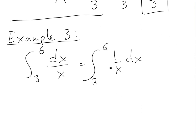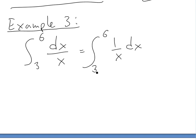If we look at the antiderivative, it equals antiderivative at 6 minus antiderivative at 3. The antiderivative is ln absolute value of x, but since 3 and 6 are greater than 0, this just equals ln x.